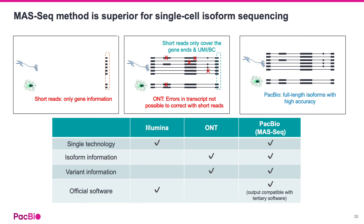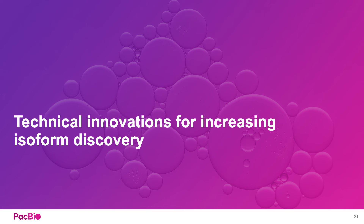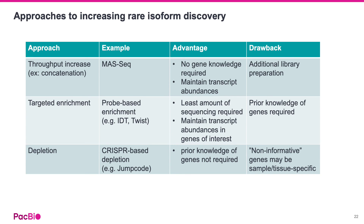With the PacBio MaSeq method, full-length isoform information can be readily captured at the single-cell level. For those with knowledge of particular genes of interest, probe-based target enrichment can dramatically reduce sequencing needs while increasing the ability to detect rare isoforms. This can only be done if a priori knowledge of genes is available.